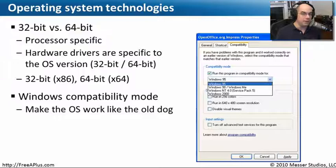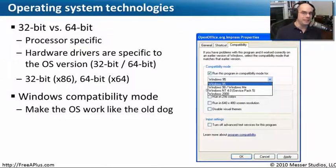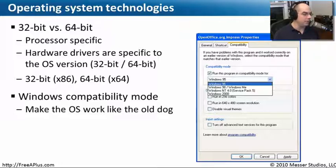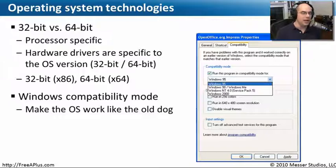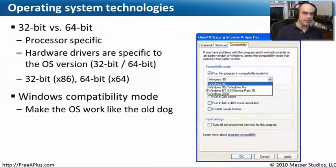If you're going to buy a laptop or a computer with a 64-bit operating system, make sure that every single piece of hardware you have has a 64-bit device driver available for it — not all hardware has that. You'll also see abbreviations for this. A 32-bit operating system might be abbreviated as x86, which goes back to some of the older chip names Intel used early on for their 32-bit processors, such as the 286 and 386. 64-bit processors are abbreviated as x64.